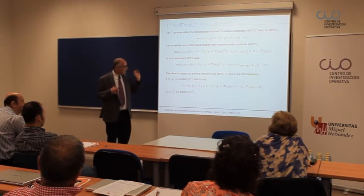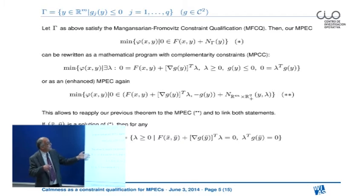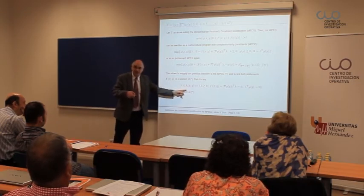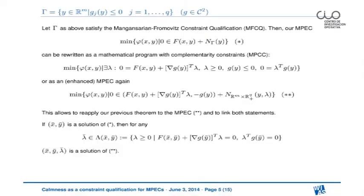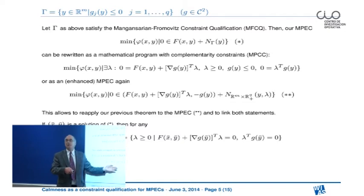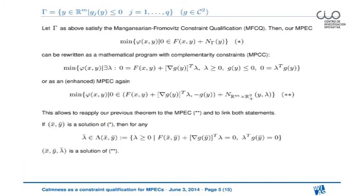This problem is exactly of the same form as the original one: again we are given a single-valued mapping and a generalized equation with a normal cone to some other set. So what we can do is reapply the same theorem to this new form of the MPEC. First we have to become aware of one well-known result: whenever x-bar, y-bar is a local solution of this MPEC, then for any multiplier belonging to the associated multiplier set — due to MFCQ the multiplier is not necessarily unique but belongs to some bounded polyhedron — for any associated multiplier, this triplet (x-bar, y-bar, lambda-bar) will be a solution of the new MPEC.